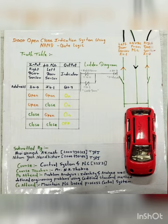You will be able to see in the diagram that the left door sensor has one wire connected to 24 volt DC from the PLC, and the right door sensor is going to I0.0.